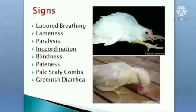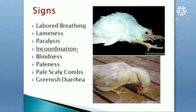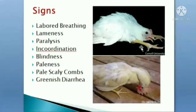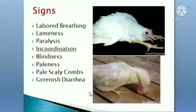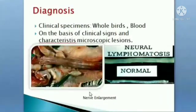The pale comb — not pinkish — blindness, incoordination, lameness, paralysis, and labored breathing can be noticed. Labored breathing means the birds are opening their mouths and gasping. Diarrhea is green in color.